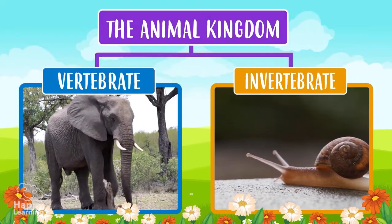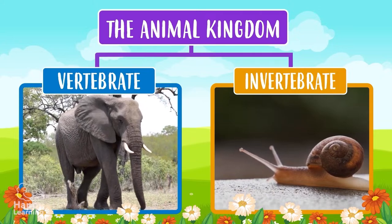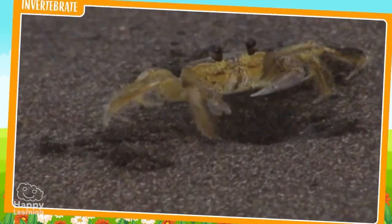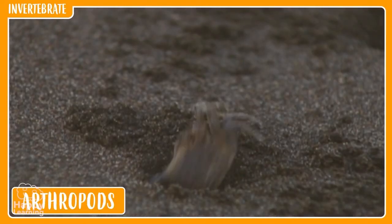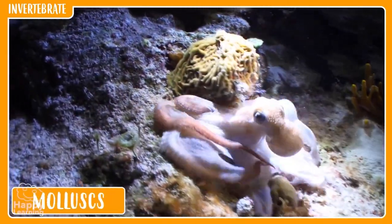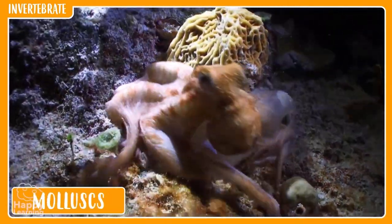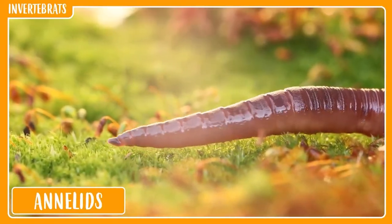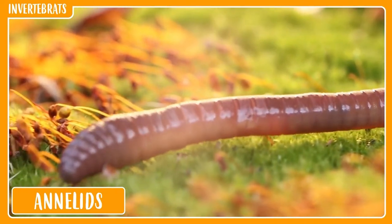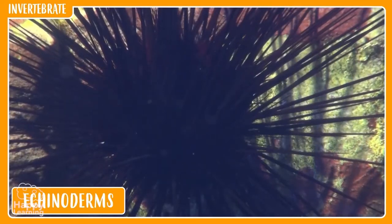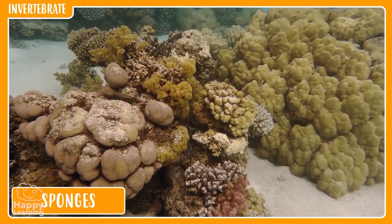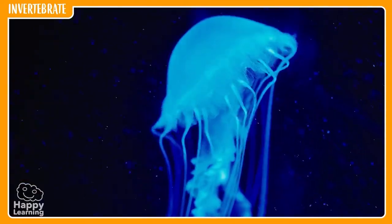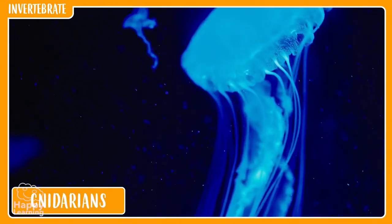Within the group of invertebrates — those animals that don't have bones — there are arthropods, like this shy crab; molluscs, like this octopus and its eight tentacles; annelids, like this worm; echinoderms, like this spiky sea urchin; sponges; and cnidarians, like this shiny jellyfish.